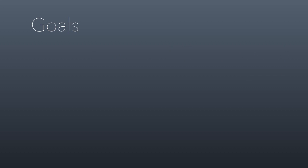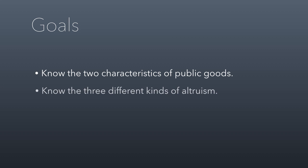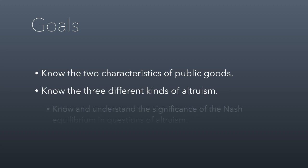The goals for today's class session: know the characteristics of public goods, which you guys probably have pinned down by now but we'll make sure. Know the three different kinds of altruism that economists have identified, and know and understand the significance of the Nash equilibrium in questions of altruism.